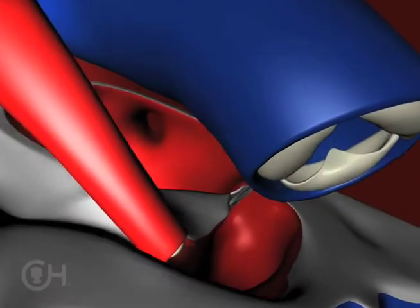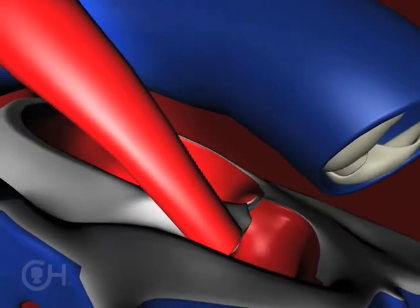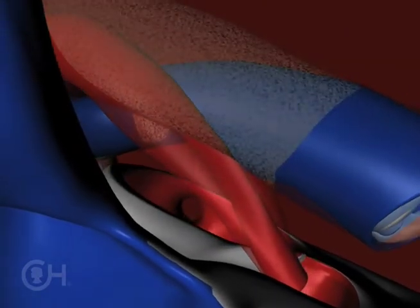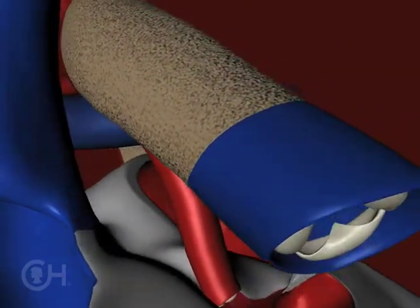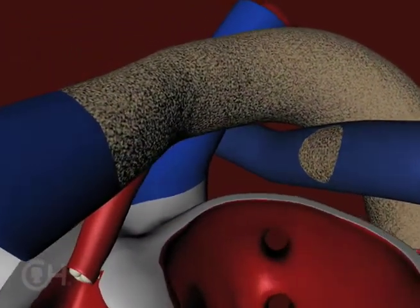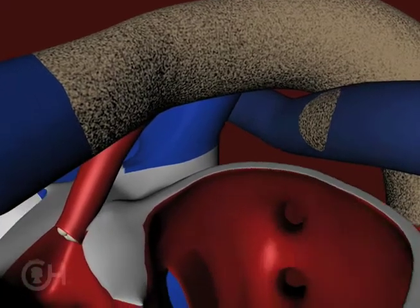In HLHS, the aorta is usually too small. So we correct that by putting a patch on to enlarge it. That's done by connecting the pulmonary artery, which comes from the right ventricle, to the aorta, and then usually putting a patch on to finish the connection of those two blood vessels and enlarge the aorta.